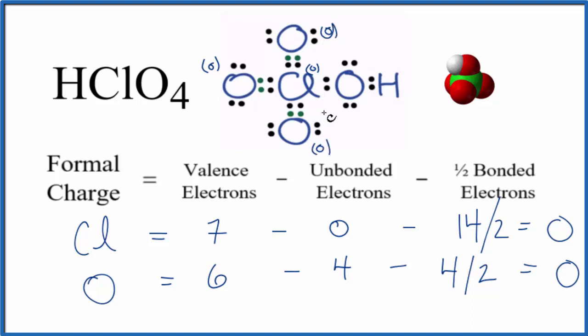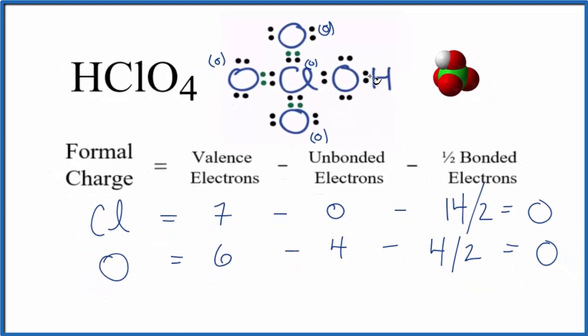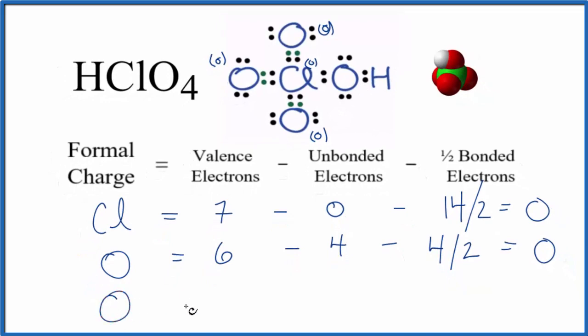For this oxygen right here with the hydrogen, we still have 6 valence electrons because it's oxygen. And then unbonded we have 2, 4, so we have minus 4 unbonded.